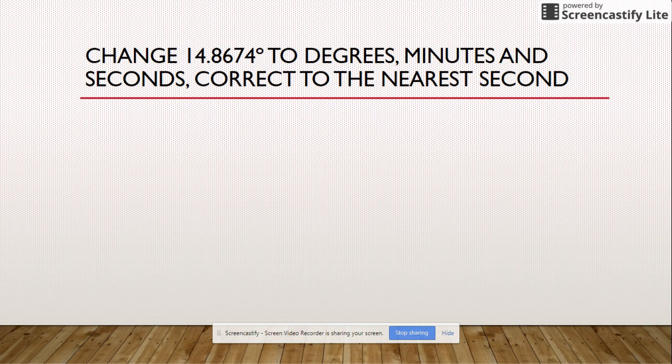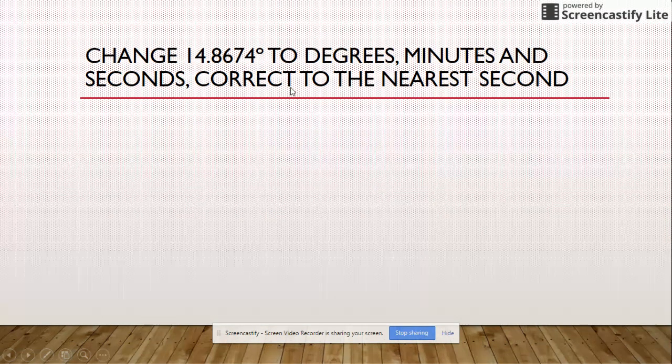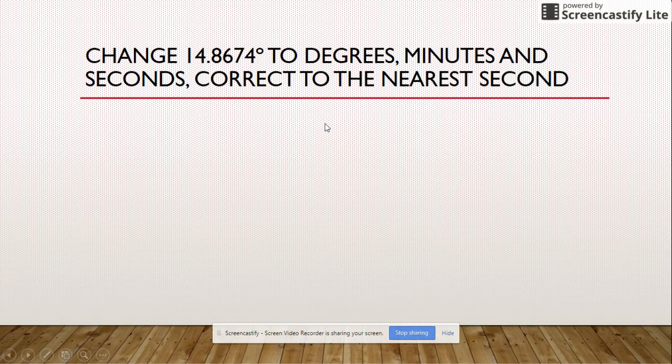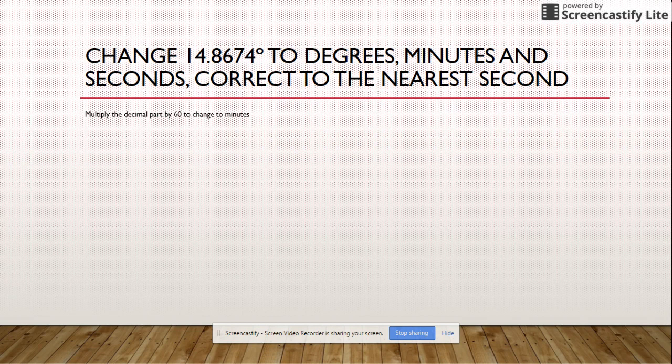Okay, now we're going to go the other way. So now we've got 14.8674 degrees and they want it as it was in the beginning: degrees, minutes, and seconds. So we say we multiply the decimal part by 60 to change it to minutes.